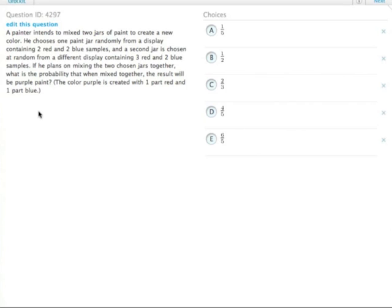So we have display one and display two. So he has red paint and blue paint in each display. So in display number one, there's two red and two blue.